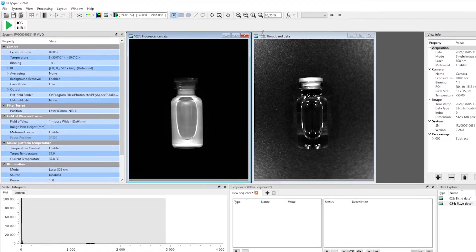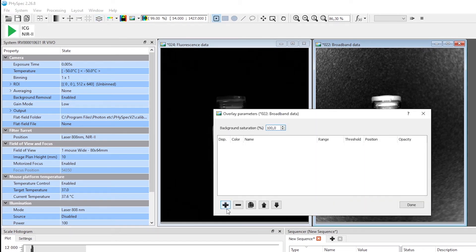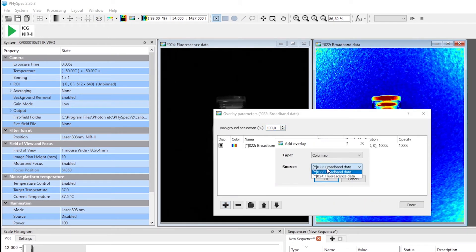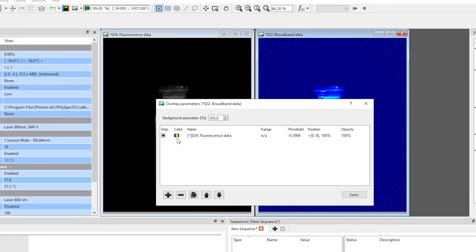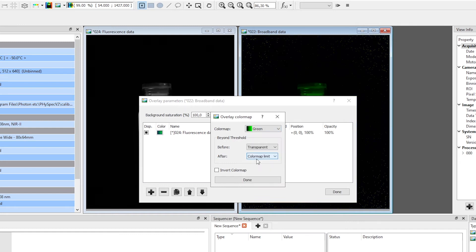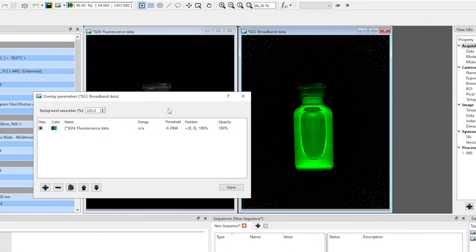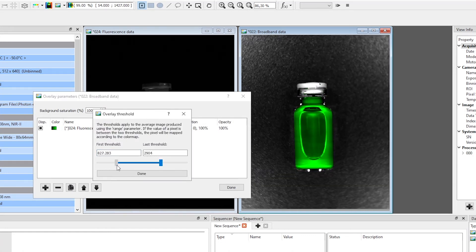Now, I will create the final image by overlaying the fluorescent image over the broadband one. Let's set the color map to green to match the ICG. Finally, we can adjust the overlay threshold to set the desired level of intensity. This way, you could visualize the fluorescence of ICG superimposed over the image of the injected mouse.